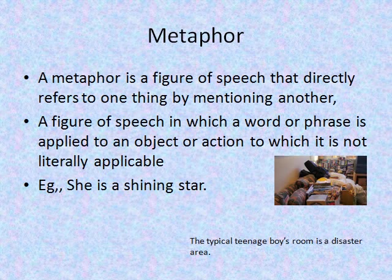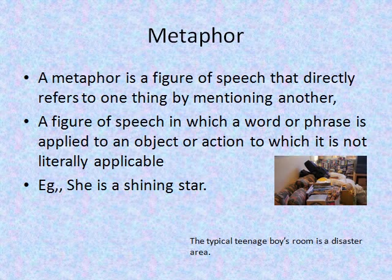Next is metaphor — a figure of speech that directly refers to one thing by mentioning another. It is speech in which a word or phrase is applied to an object or action to which it is not literally applicable. For example, when we say 'she is a shining star,' she is not literally a star, but is called so because of her talent. It may provide clarity or identify hidden similarities between two concepts. Another example: 'the typical teenage boy's room is a disaster area.'